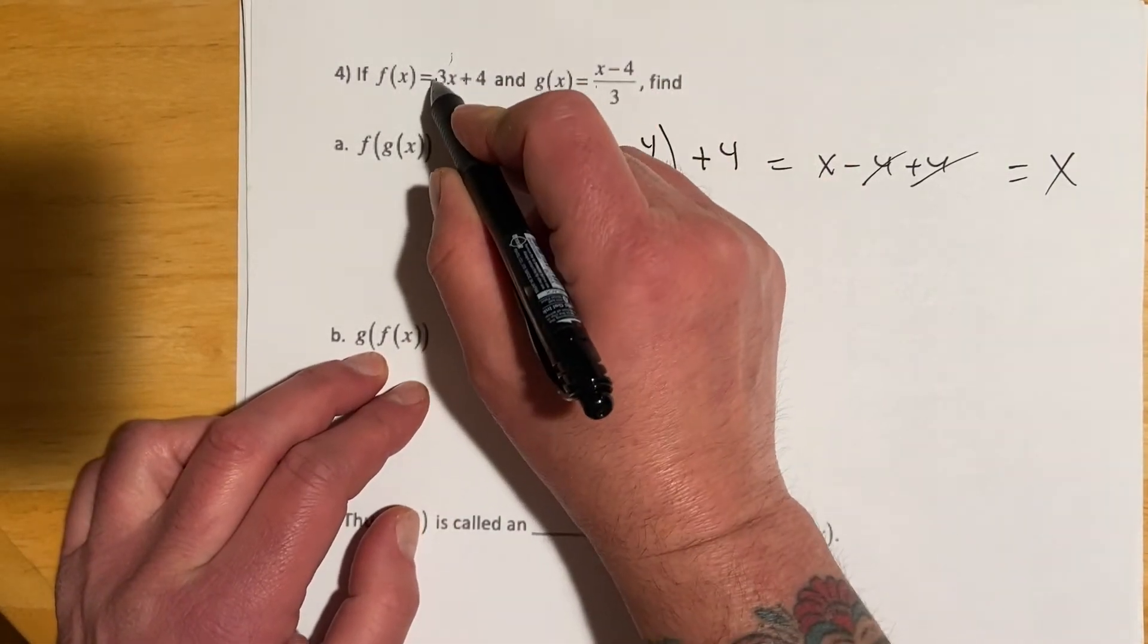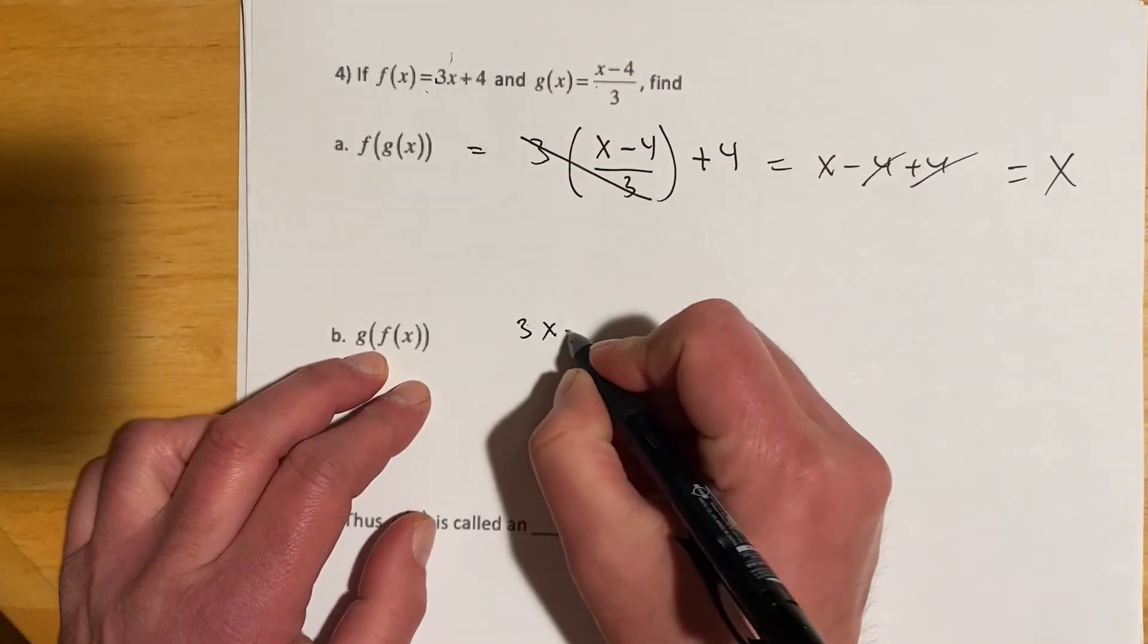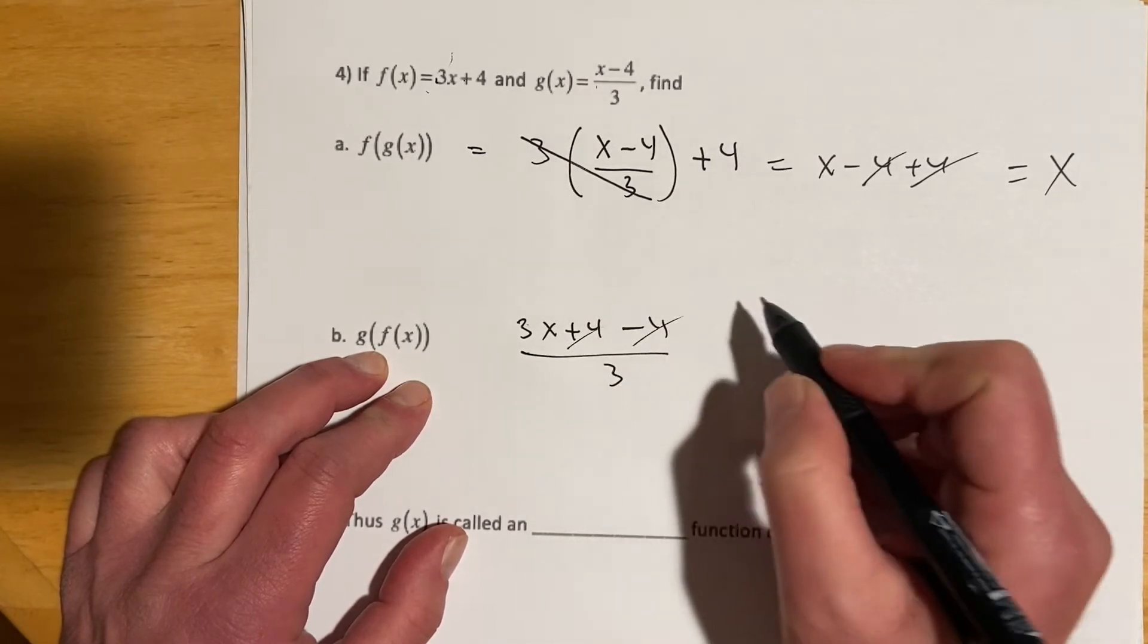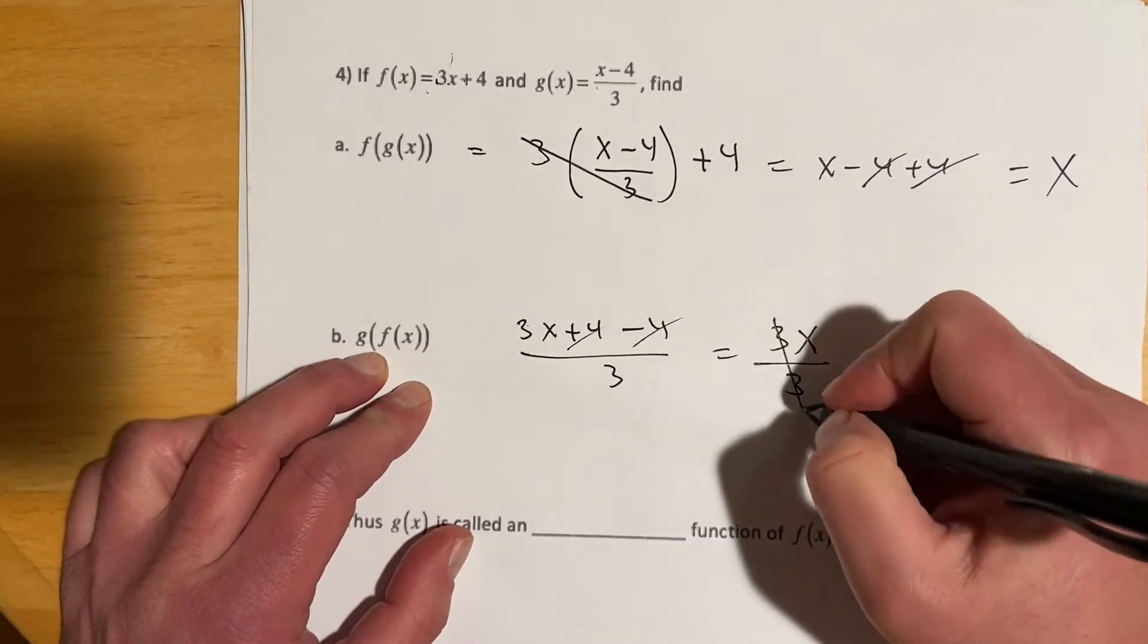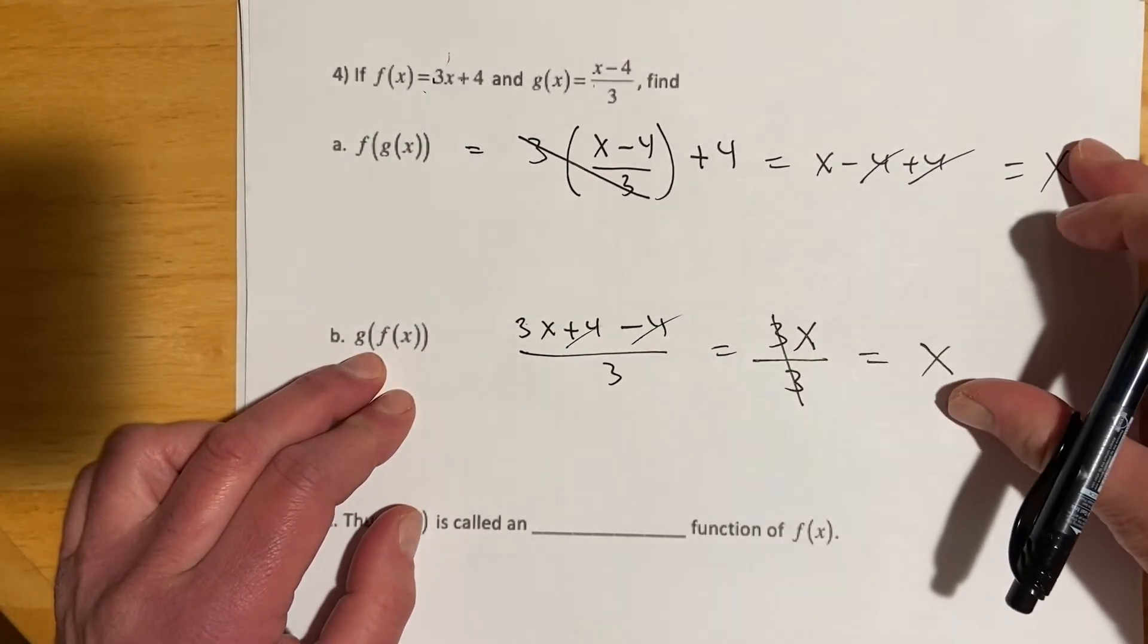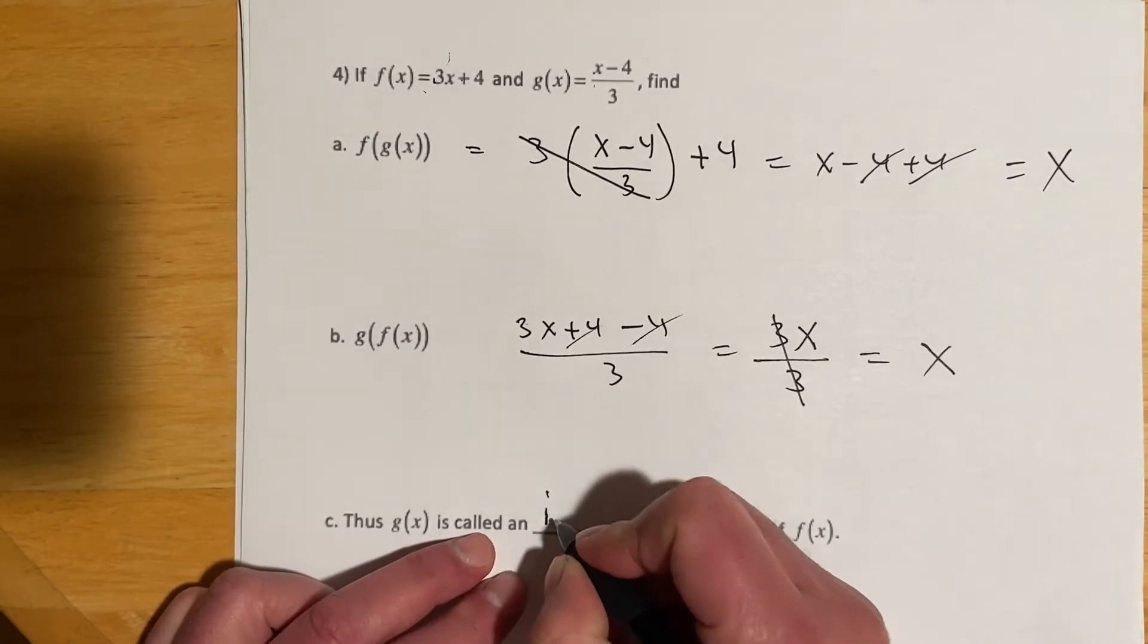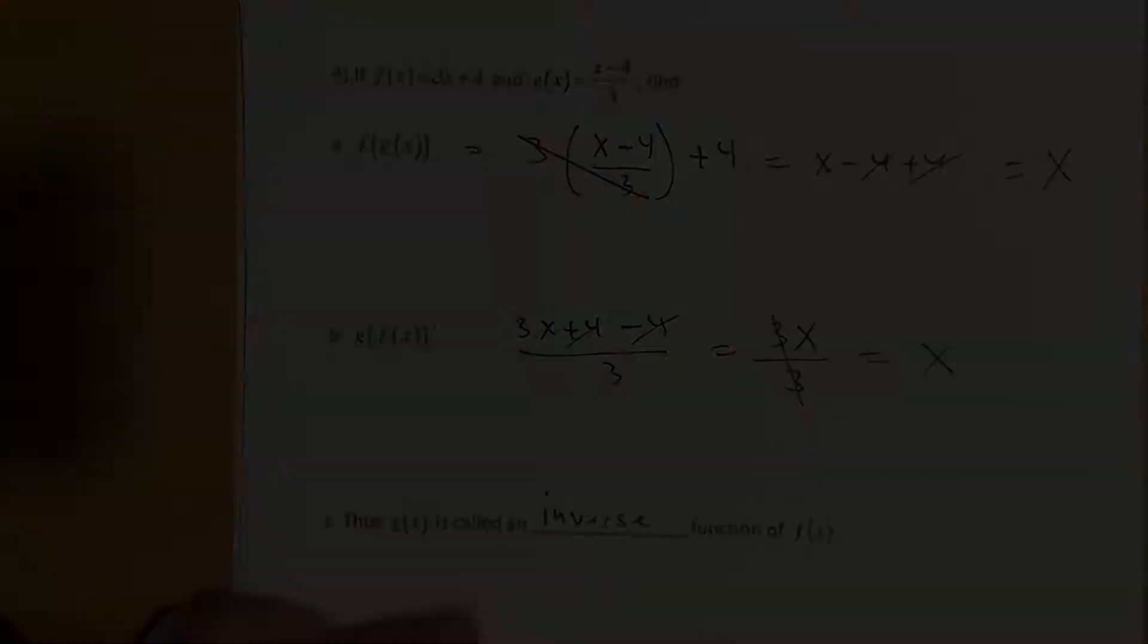And then here, same idea, but now we're putting f into g instead of g into f. This would be 3x plus 4 minus 4 over 3. Plus 4 minus 4 cancels, leaving 3x over 3, 3's cancel, leaving x. So since both of the composites come out to x, then that's an inverse. That's what you'll put in this box on the homework, is inverse.